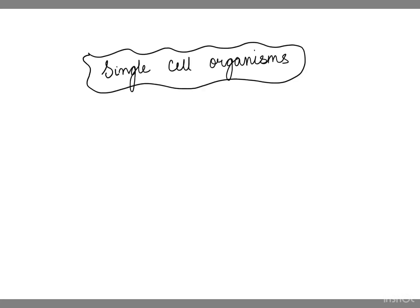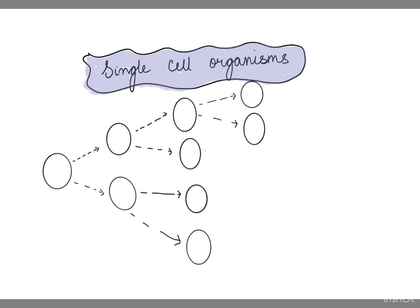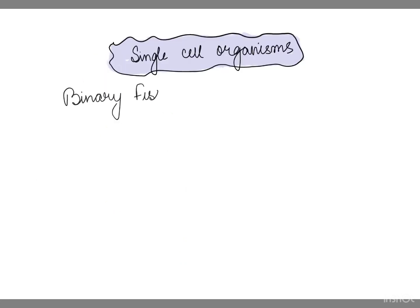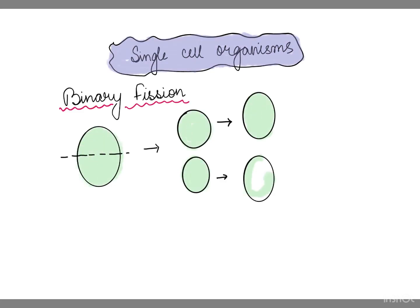In single-celled organisms, cell division itself serves as reproduction through mitotic cell division. One example of asexual reproduction in single-celled organisms is binary fission, where the organism divides into two equal halves, and each half grows into an adult organism. An example is amoeba.